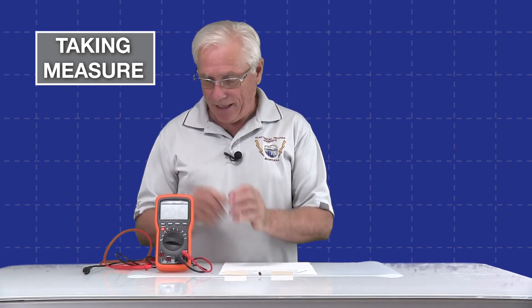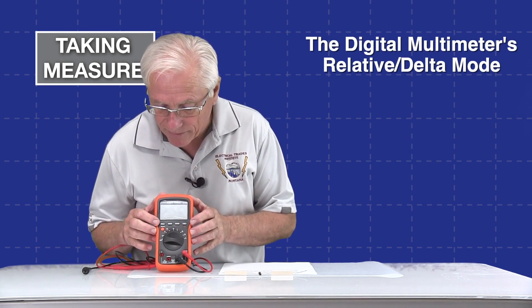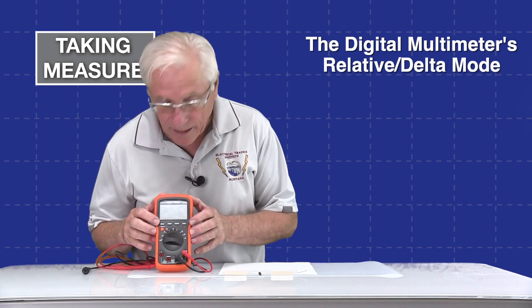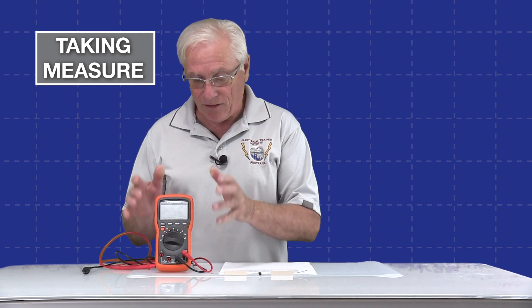Today I would like to talk about an advanced feature. If you look at this digital multimeter, you'll see it has a button that says REL and it has a delta symbol. That's a relative mode or what's often called a delta mode. It's a really advanced feature and it's kind of interesting to work with, so let's take a minute and we'll explore it.